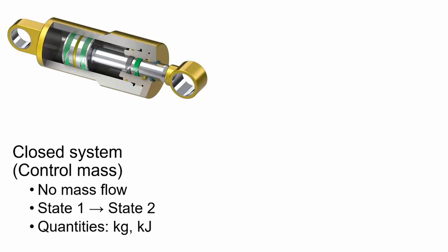Before we get to transient open systems, let us take a quick look back at what we've already discussed. In a closed system, while work can be done by the control mass and heat can be transferred across the system boundary, there are no mass flows across the system boundary. A typical example is a piston-cylinder arrangement, where we work with amounts of substance, heat, and work in kilograms and kilojoules.